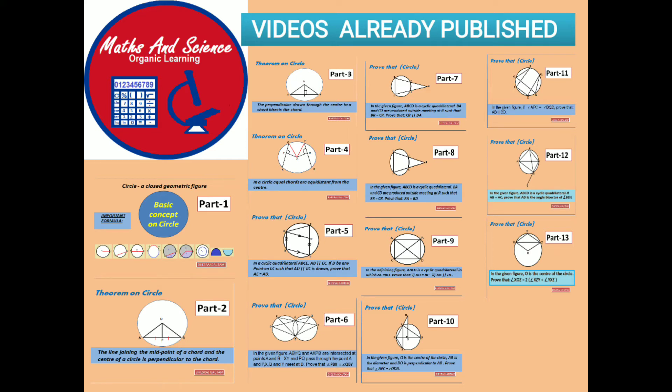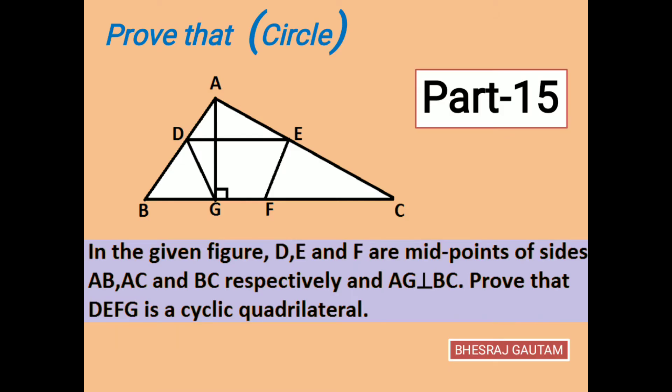Now the case given is a triangle ABC with the midpoints D, E, and F of each side AB, AC, and BC. Also, AG is perpendicular to BC. We are here to prove DEFG is a cyclic quadrilateral.